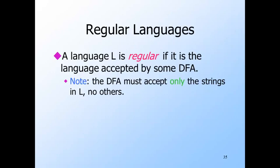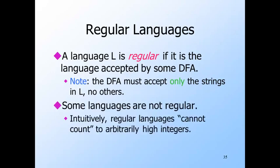Now we introduce a class of languages called the regular languages — those that have a deterministic finite automaton accepting them. Soon we shall see that there are several other ways to describe regular languages, including by regular expressions and non-deterministic automata. While many common languages are regular, there are also many that are not. Intuitively, finite automata cannot count beyond a fixed number. Thus, they cannot check whether they've seen the same number of zeros as ones, or check that parentheses are balanced in an arithmetic expression — for those tasks, we need more powerful mechanisms such as context-free grammars.